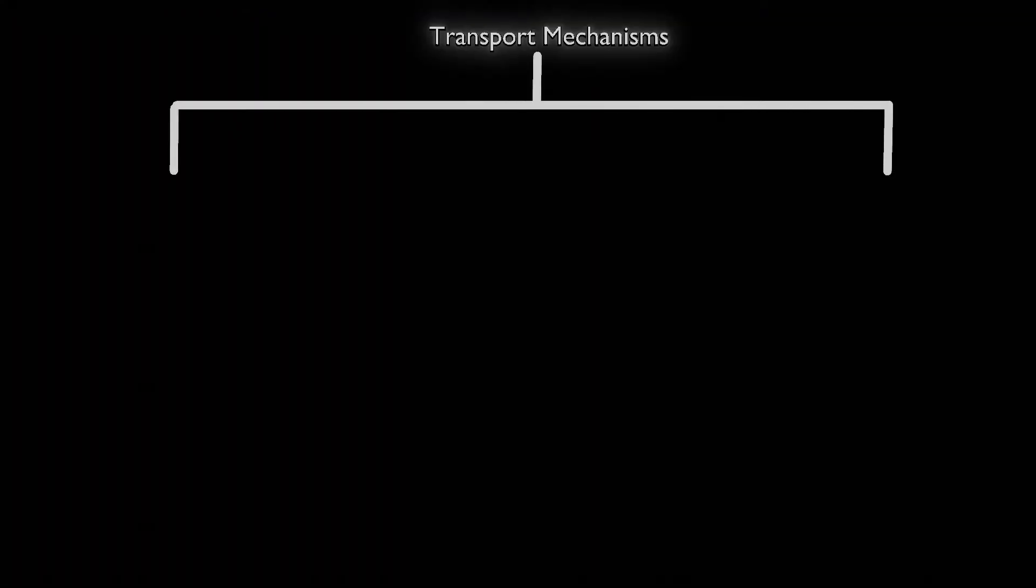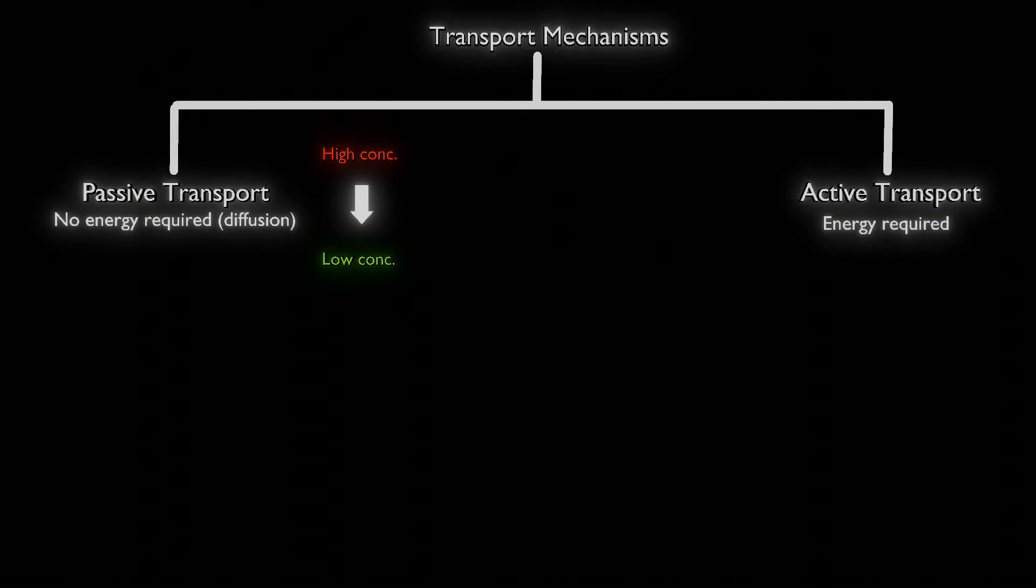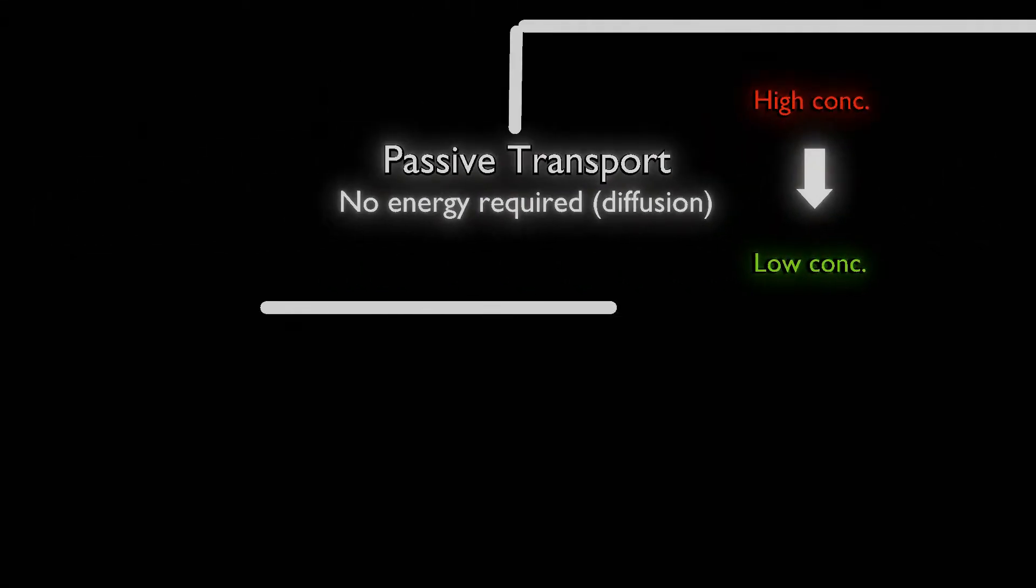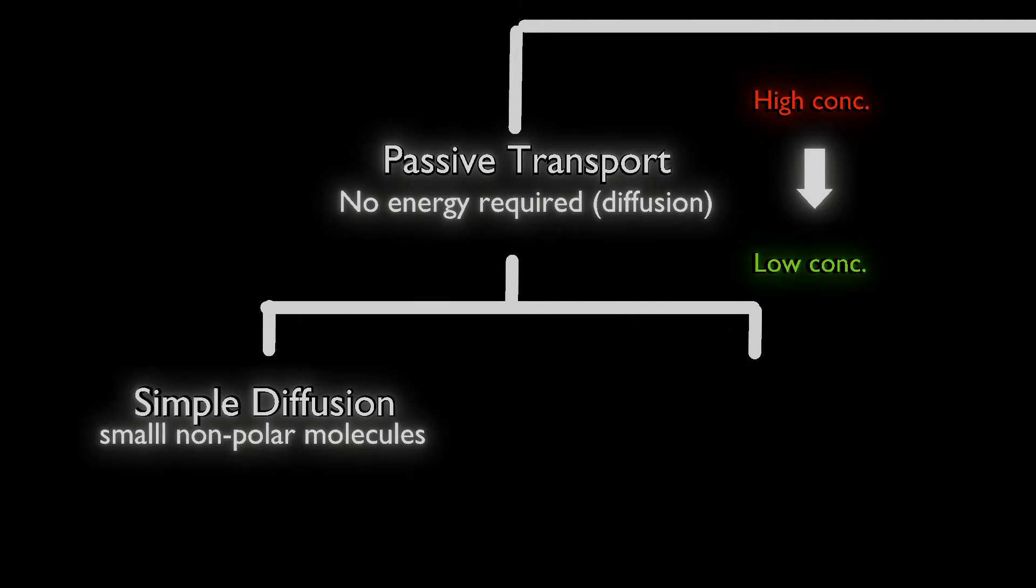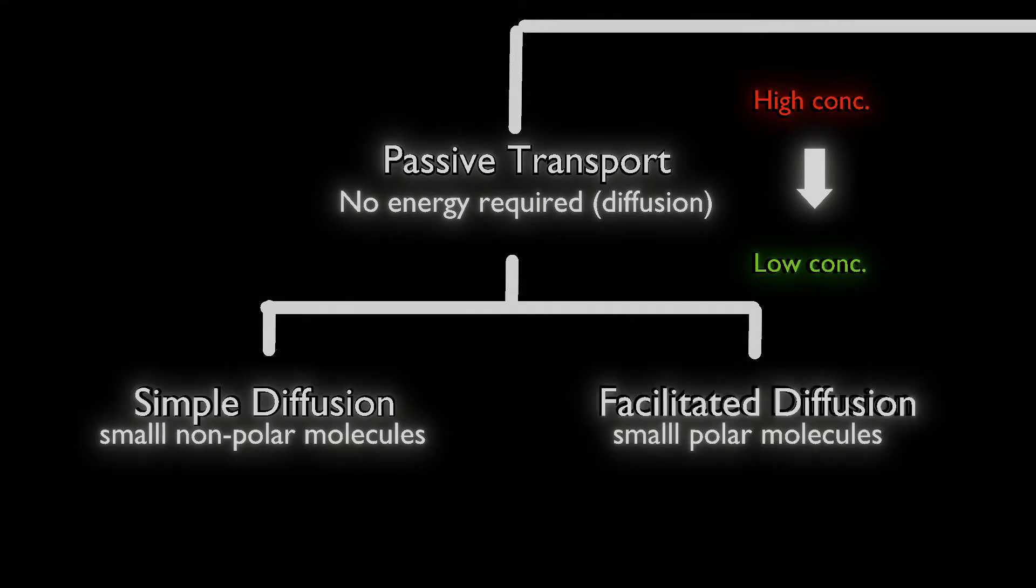Welcome to Animated Science. Today we're looking at transport mechanisms, mainly vesicular transport. Just a quick review: we looked at passive transport and active transport. Passive transport requires no energy and uses diffusion as its main mechanism, meaning molecules move from high concentration to low concentration.